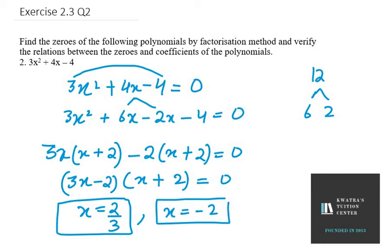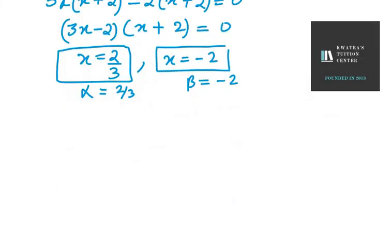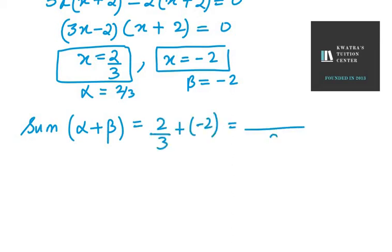So in this case I will be taking α as 2/3 and β as -2. Now for the verification part, what we need to do is we need to find sum of the roots, that is α + β. So α + β is 2/3 + (-2) = 2/3 - 6/3.